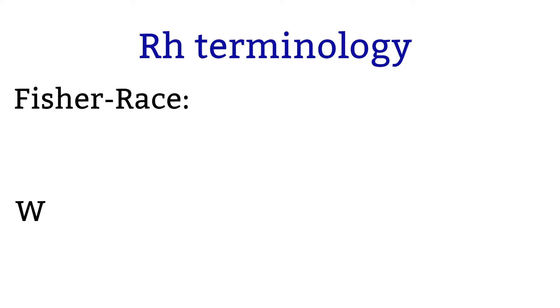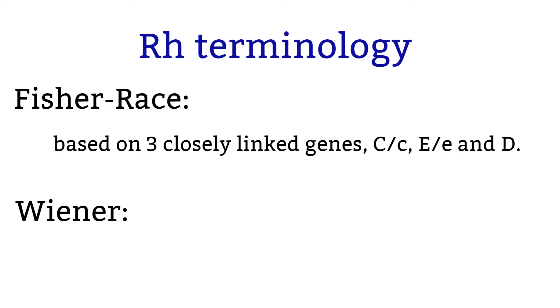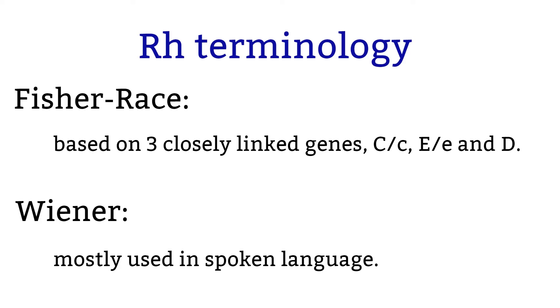There are different ways to refer to RH antigen. I will cover Fisher Race terminology and Wiener terminology. Fisher Race is terminology based on three closely linked genes. This is commonly used in writing to clearly indicate the presence or absence of the antigen. Wiener terminology is more commonly used in spoken language because it is shorter. It is important to be able to interchange between the two because they are commonly used in the workplace and likely to show up on the exam as well.